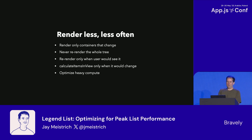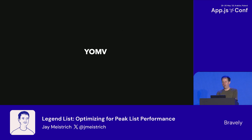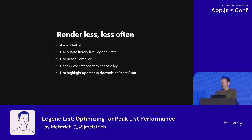So with all that, we're rendering only the minimum number of containers that actually changed, we're never re-rendering the whole tree, we're re-rendering only when the user would actually see it, and we're doing expensive computations only when absolutely necessary. Your optimizations may vary — these are the bottlenecks specific to a performant virtual list because it needs to reposition and re-render tons of items at 60 frames per second. Your app's bottlenecks will be different and require different solutions. But I would bet that most bottlenecks are from rendering too much too often.